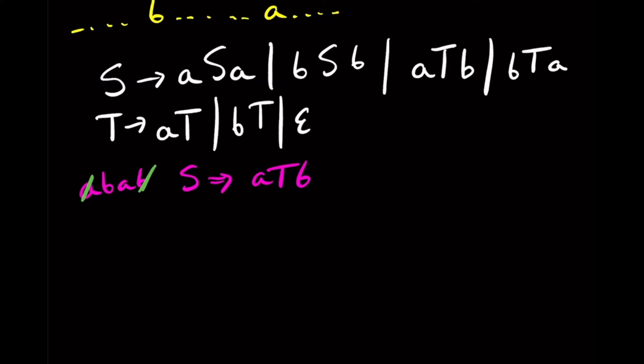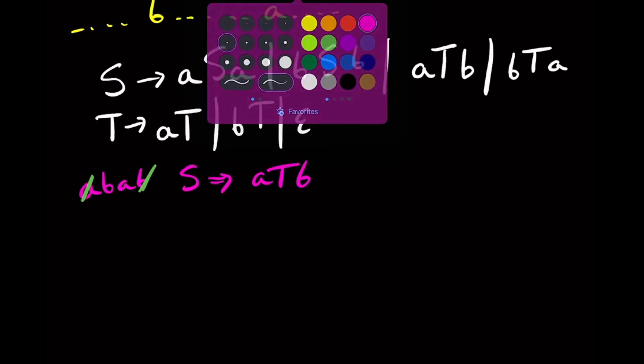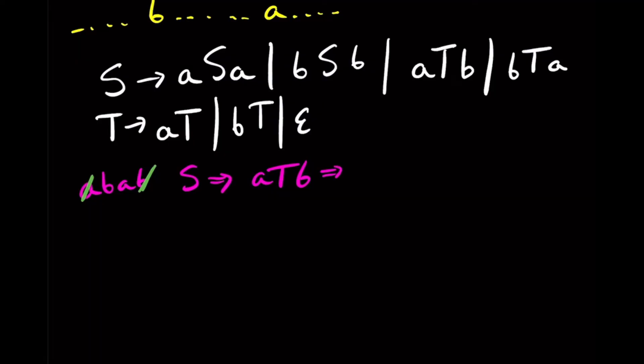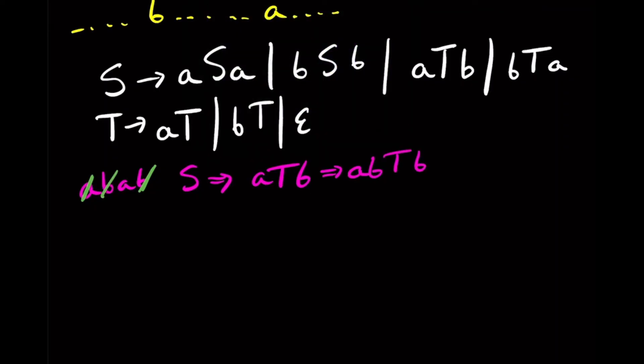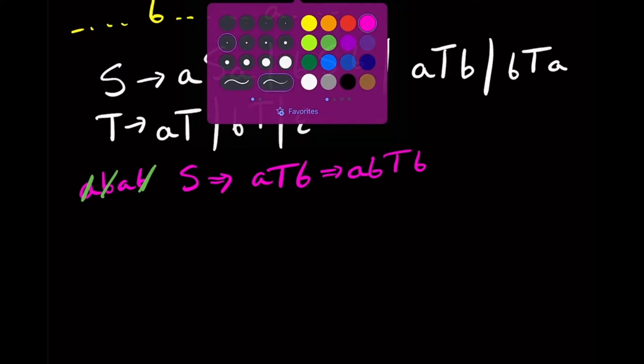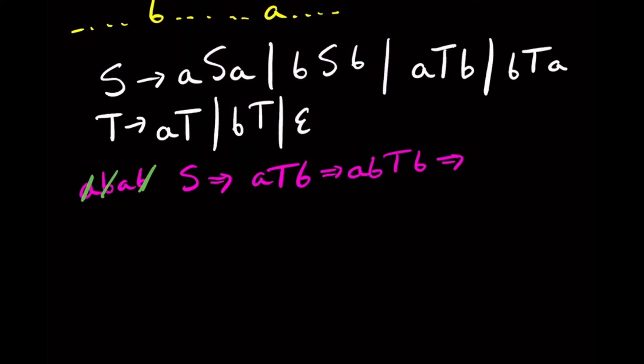So then, now here, this B A will be able to be generated by the T variable, because the T variable makes every string. So here, we're going to generate the B first. So we'll have A B T B. And then that will kick off that one B. And then we'll generate the final A. So we'll have A B A T B.